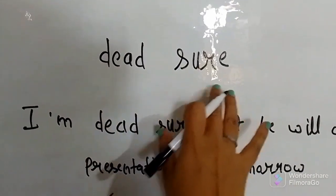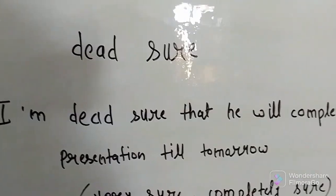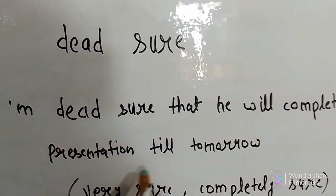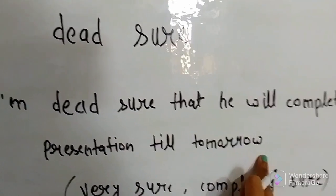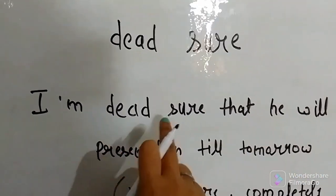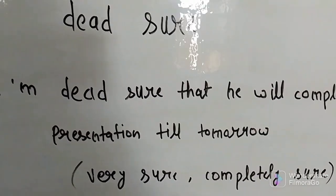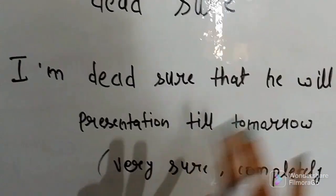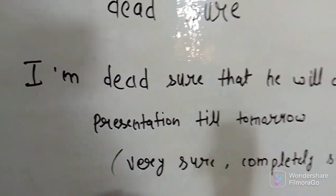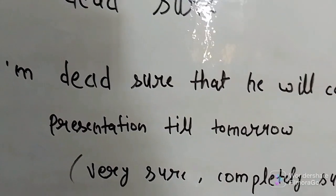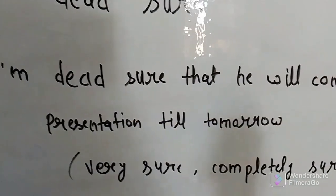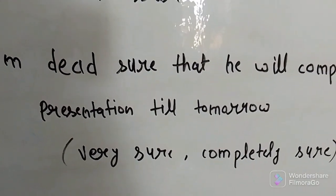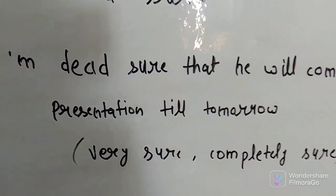The next is 'dead sure.' Look at the example: 'I'm dead sure that he will complete the presentation by tomorrow.' The meaning of 'dead sure' is 'I'm very sure' or 'I'm completely sure' that he will finish the presentation by tomorrow.